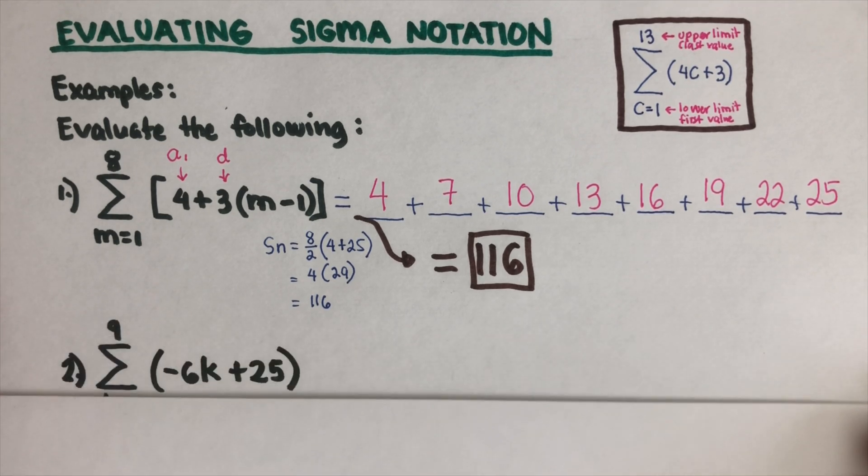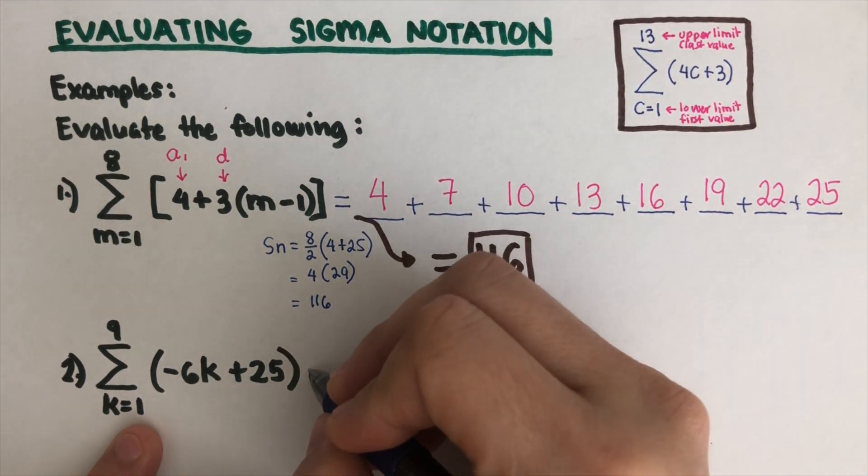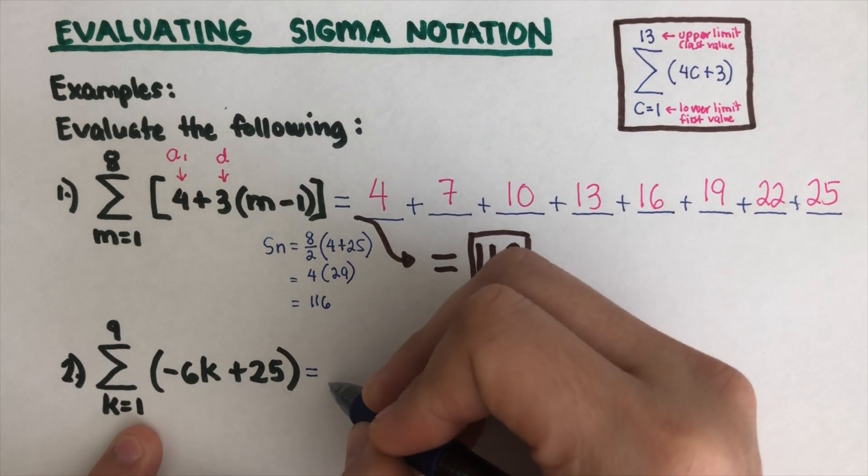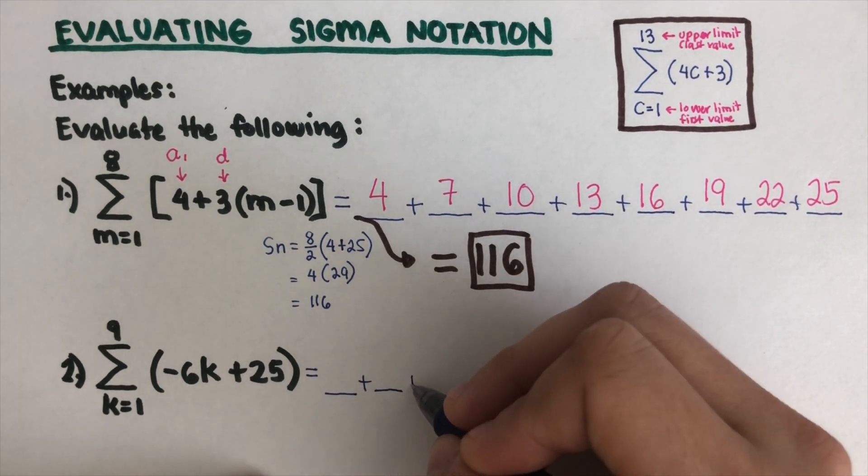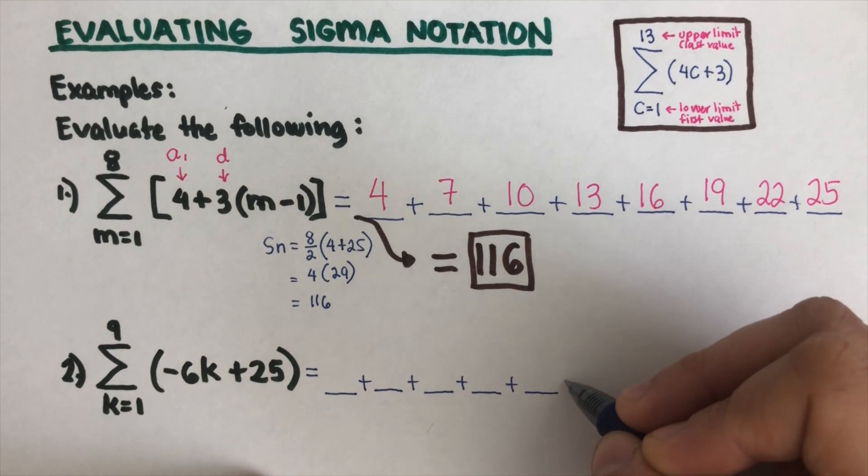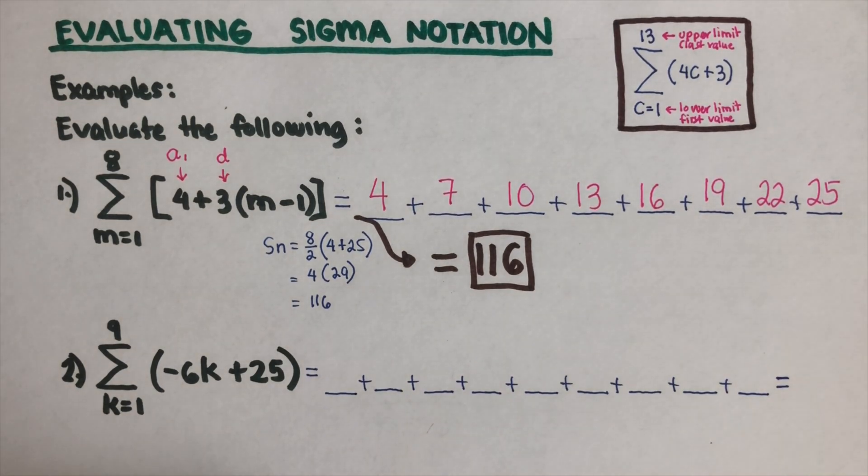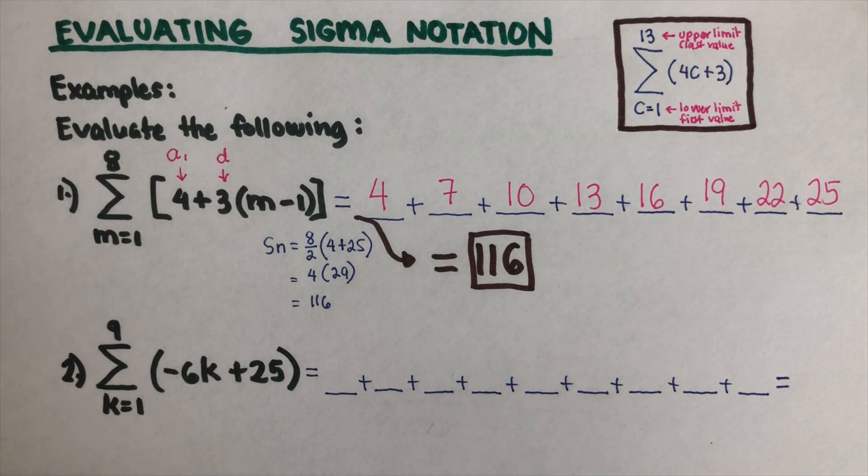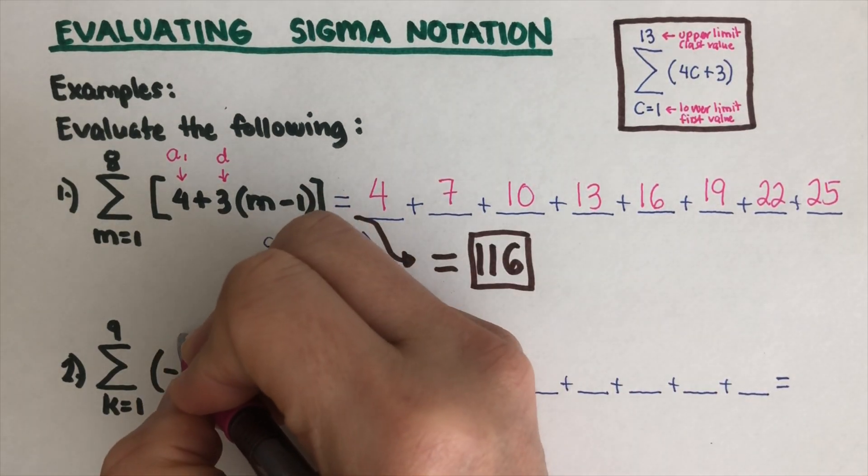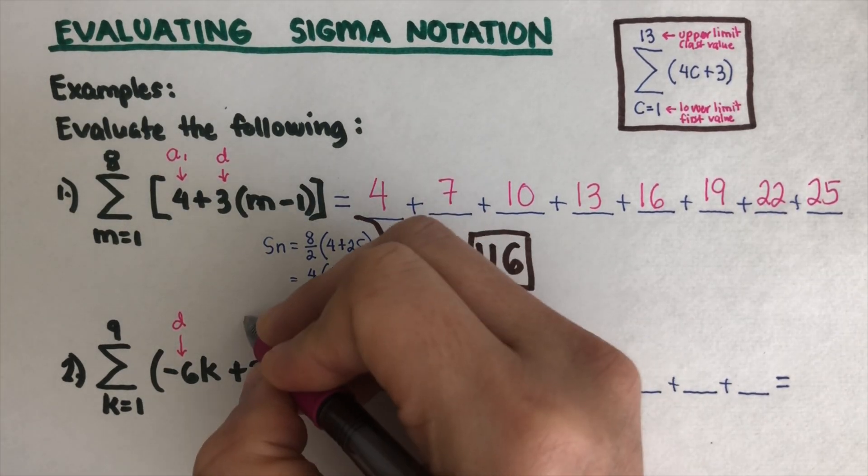Let's have the second example right here. We have this notation, so we are going to write nine blanks. Let's define this one first. Remember that in the equation of writing arithmetic series, this is our difference and then this is the zeroth term b.